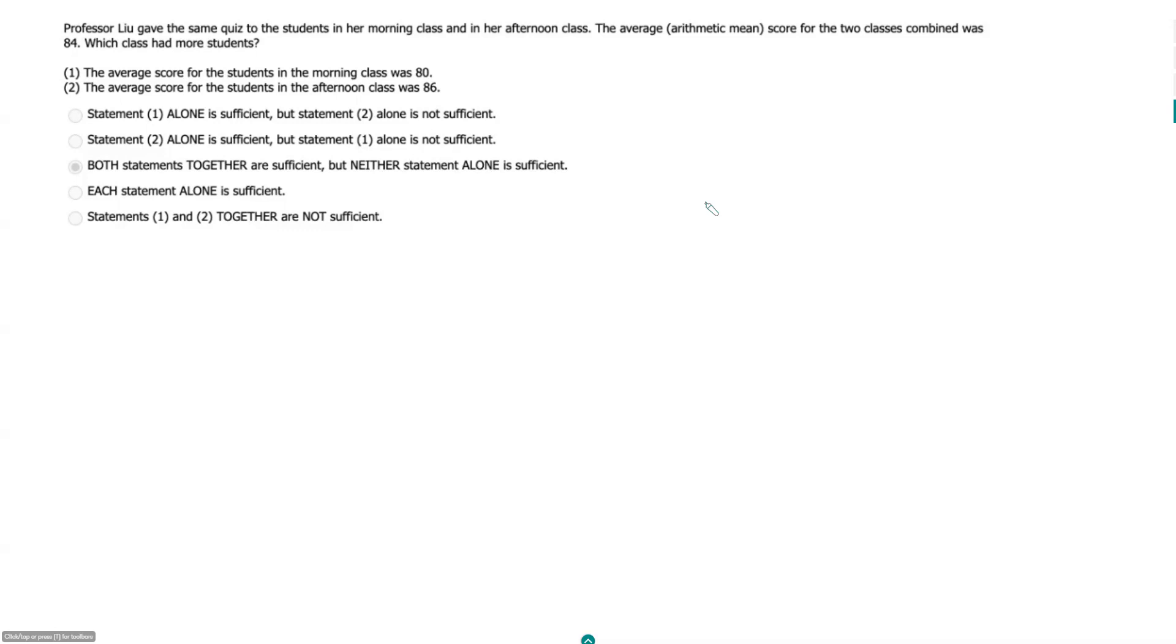So average is equal to your sum over your total, or in this case our average, which is 84, is equal to the sum of our scores for our two classes. So that would mean our scores from the morning class plus the scores from the afternoon class.